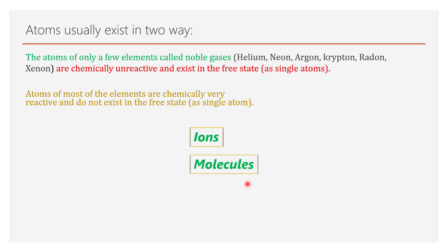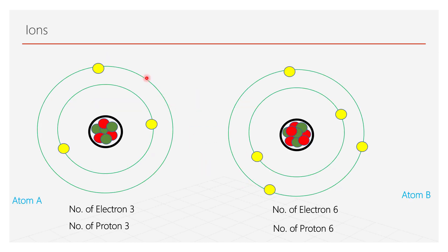Now we will discuss about ions. To understand the concept of an ion, let us assume we have two atoms, atom A and atom B. Atom A has three electrons and three protons. On the other hand, atom B has six electrons and six protons.